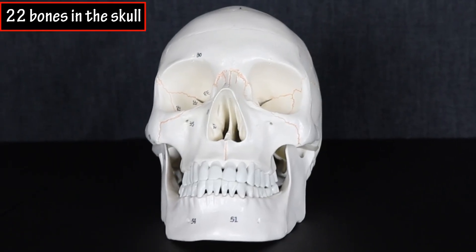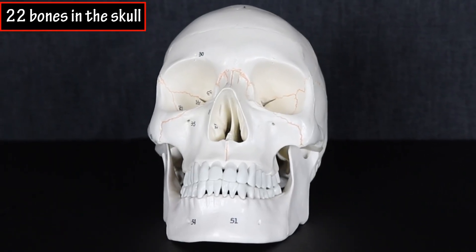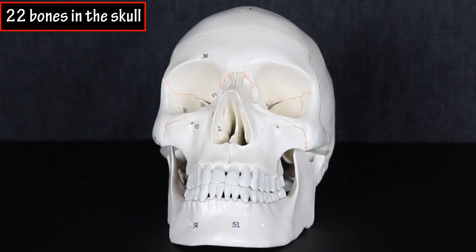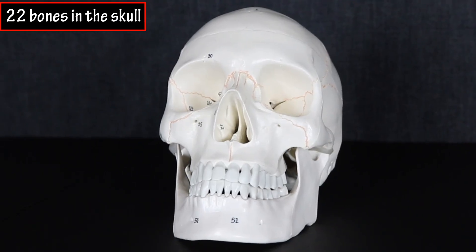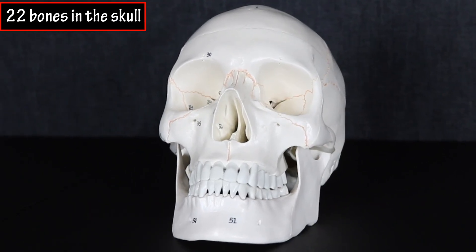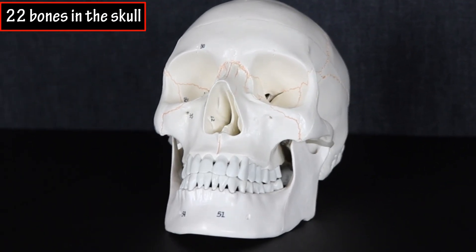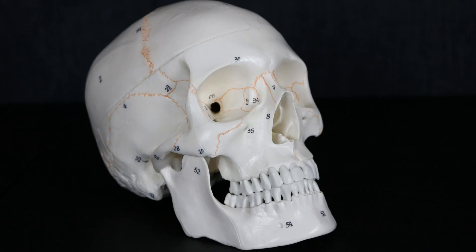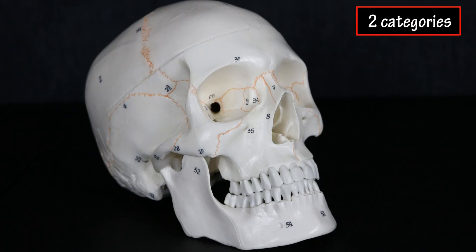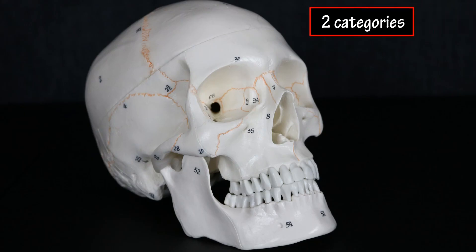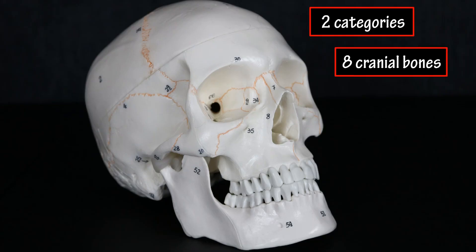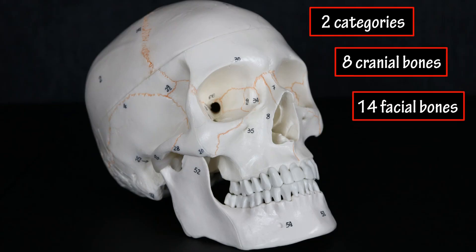Your skull is comprised of 22 different bones. Most of these bones are joined together by sutures, which are the orange lines on this skull model. The bones of the skull can be separated into two categories: 8 cranial bones that surround and protect the brain, and 14 facial bones that form the face and provide for attachment of facial muscles.